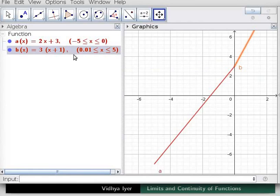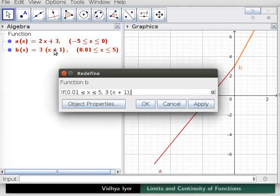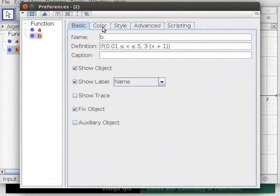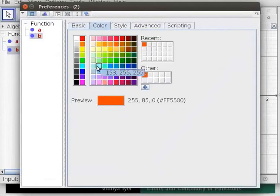In Algebra View, double click on the equation b of x equals 3 times x plus 1. Click on Object Properties. Click on the Color tab and select Blue. Close the Preferences dialog box.